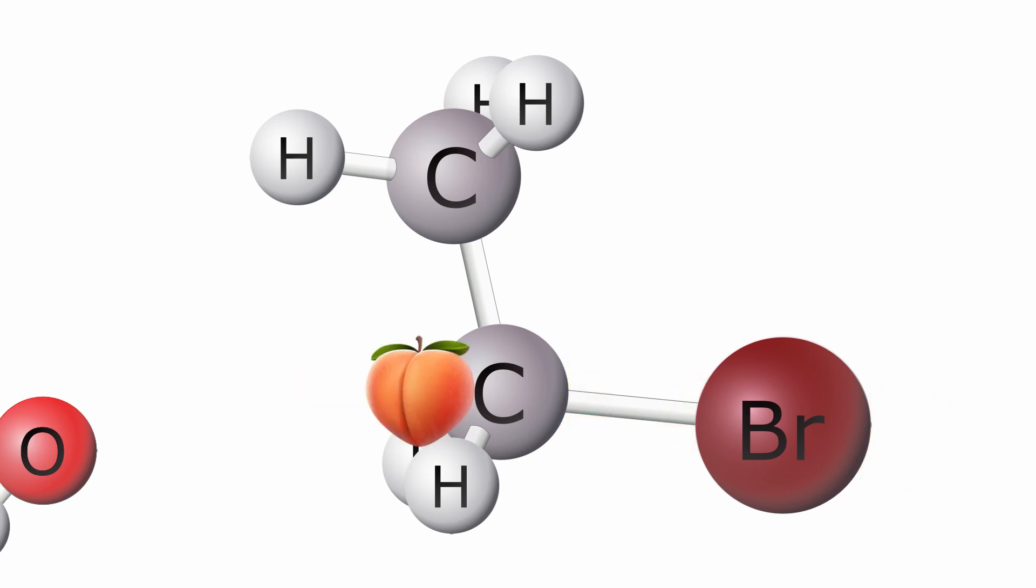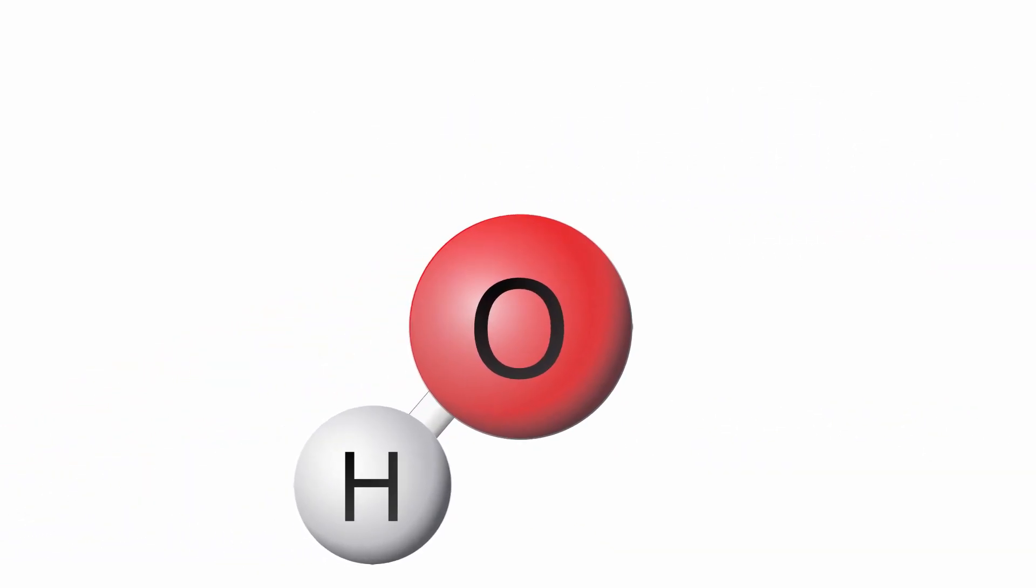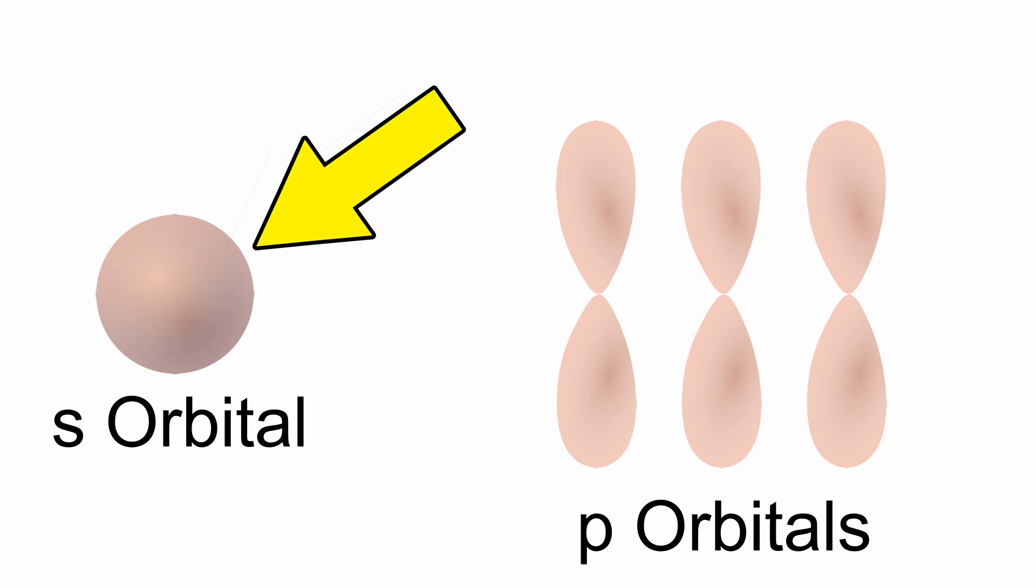Now, to get at these cheeks, our oxygen on the hydroxide must do a little thing called hybridize its orbitals. Let me show you what it's working with. Here are its available orbitals for bonding. It's got one s orbital and three p orbitals. You can see how penetrating the cheeks might be difficult with its s orbital as it's not very long and mostly confined near the atom. Now watch what happens to the shape of the orbital when we mix one-fourth of an s orbital with three-fourths of a p orbital.